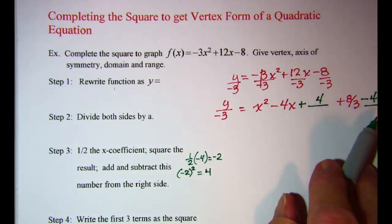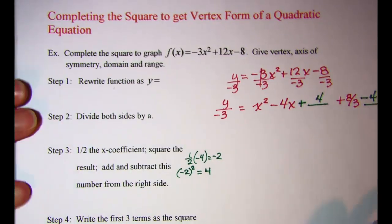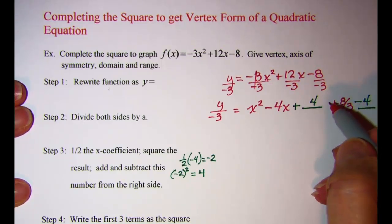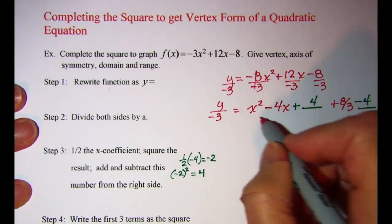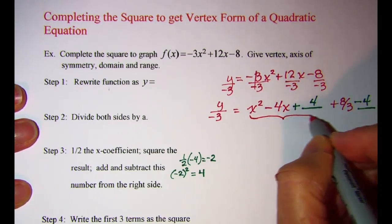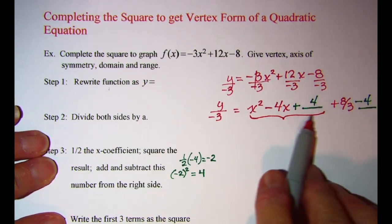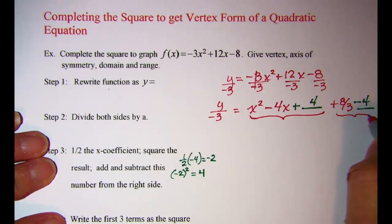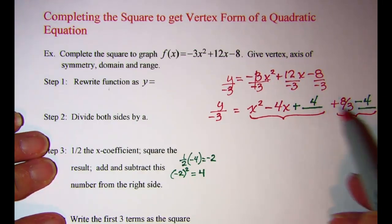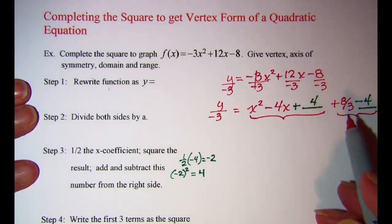So now you can see why I left a space there. You have to add and subtract, and the reason for that is first of all so that you don't change the value of the equation. But the main thing you need to realize is that these will not be canceling each other out, because what I'm going to do next in step 4 is I'm going to group these first three terms together and then group the last two terms together, so that the positive 4 and the negative 4 are actually not going to make each other go away.